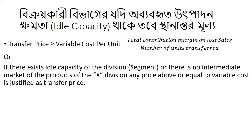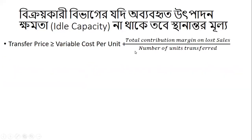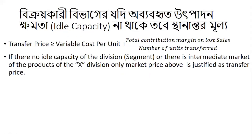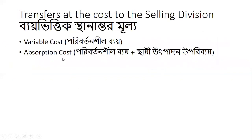If there is any price above or equal to variable cost, then there is no price above that. If there is no idle capacity of the division or there is an intermediate market for the product of Division X, only market price is justified as the transfer price.